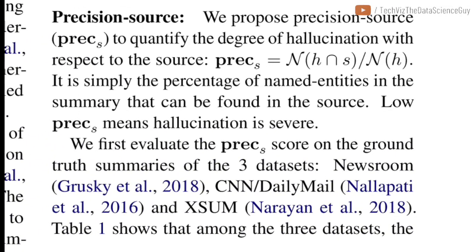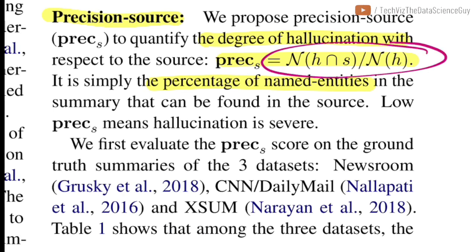The first metric they propose is precision_source, which defines the degree of hallucination. The formula is the intersection of entities in the generated summary and the source document, normalized by dividing by the number of entities in the summary. This gives a percentage view of named entities found in the summary that are also in the source. A very low value would indicate severe hallucination, because in that case the denominator would be very high.